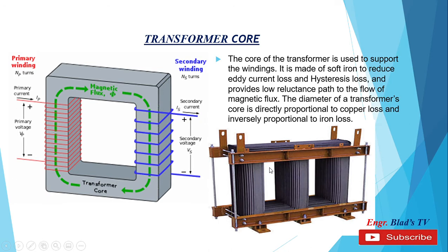Transformer core. The core of the transformer is used to support the windings. It is made of soft iron to reduce eddy current loss and hysteresis loss, and provides a low reluctance path to the flow of magnetic flux. The diameter of a transformer's core is directly proportional to copper loss and inversely proportional to iron loss. In this picture we can see a typical assembly of a transformer core, with a primary winding wound on the primary side and a secondary winding wound on the secondary side. Voltage applied from the primary will produce a magnetic flux through the core, and the amount of magnetic induction produced will induce a voltage in the secondary winding.